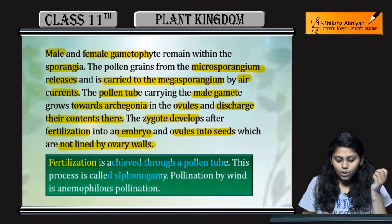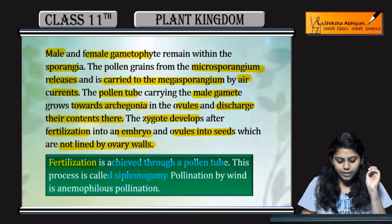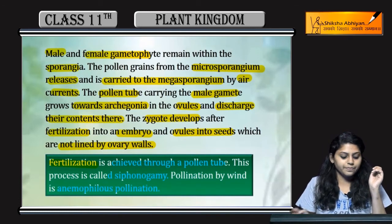Fertilization is achieved through pollen tube — this process is called siphonogamy. And pollination by wind is called anemophilous pollination.